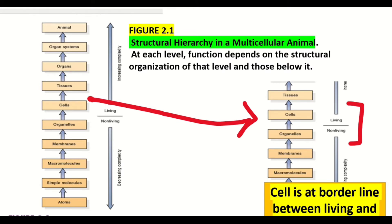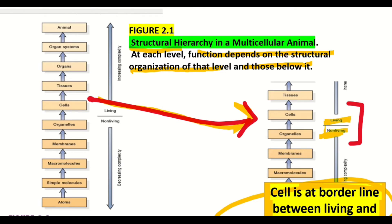Figure 2.1 shows the structural hierarchy in a multicellular animal. At each level, function depends on the structural organization of that level and those below it. As you can see, cells are the borderline between living and non-living organisms.